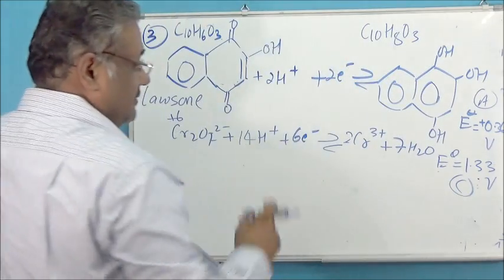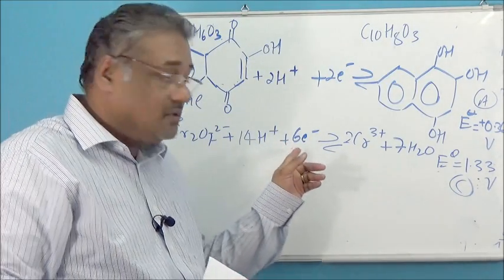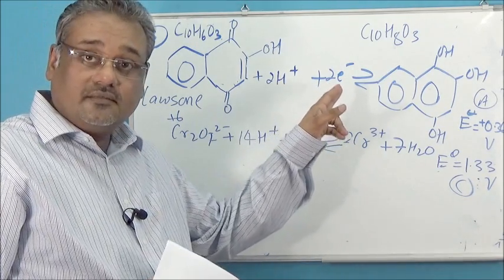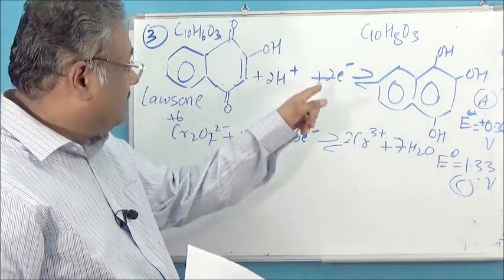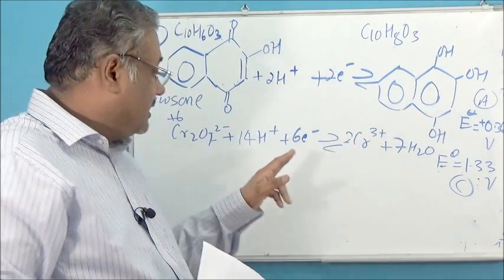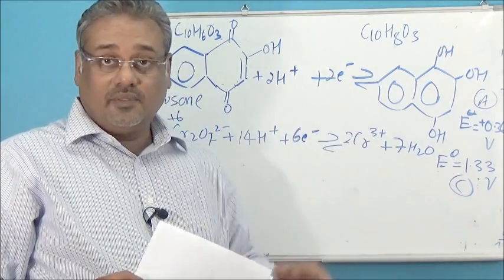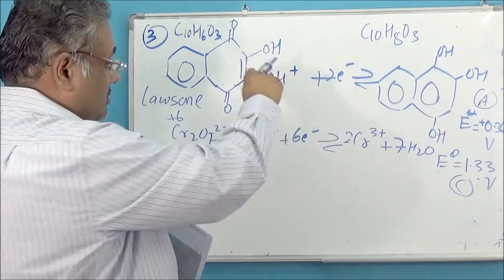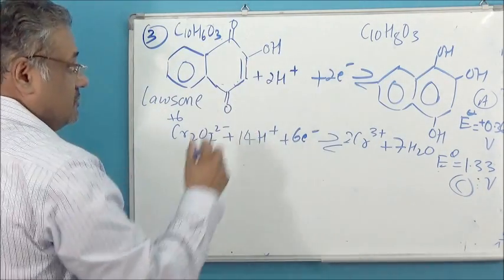I'm going to keep the cathode equation as it is and flip the anode equation the other way around. The other thing I have to do is match the number of electrons - I have six electrons in one equation and two electrons in the other, so I need to multiply the anode equation by 3 to make the electrons equal to 6. That's an important step, otherwise the answer won't be right. Two key things: flipping the equation and multiplying by 3.